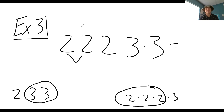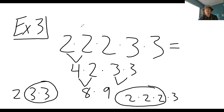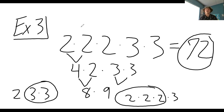It's going to be 72. Two times two is four, multiply that by two — that's eight. Three times three is nine. Eight times nine is 72. So that's how I would break that down — do your factor tree, then take the most amount of each prime factor. For 24 we had three twos, and for 18 we had two threes.